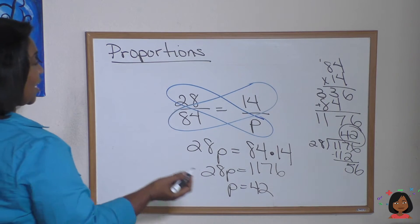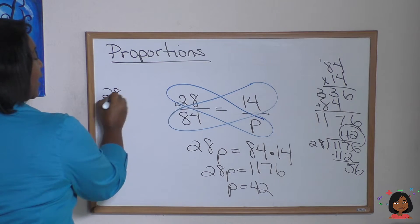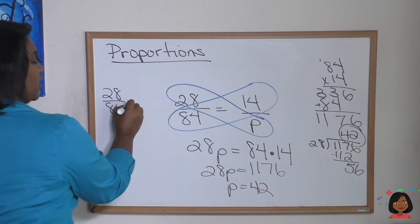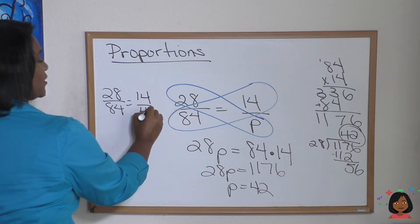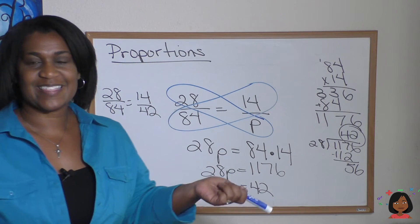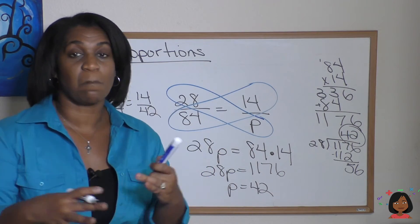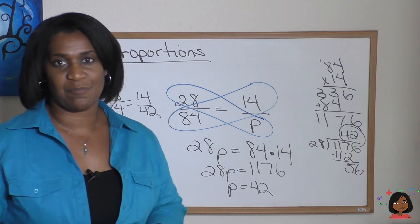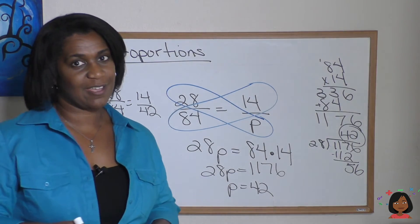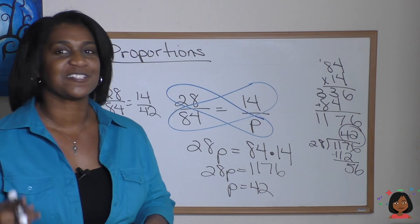And here's what our proportion looks like when it's filled in. 28 over 84 equals 14 over 42. That's it. As I said, proportions are really just equivalent fractions, but we have to cross multiply to find out the missing number. Make sure you try these practice problems. Do them over and over until you get them.